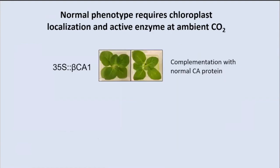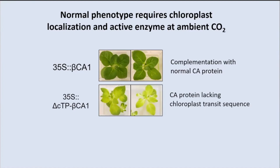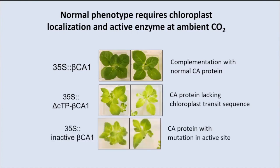We did complementation using the 35S promoter, complementing with CA1, and the complementation shows complete normalization of the phenotype when you complement with the normal carbonic anhydrase protein. However, if you make a CA protein that lacks the chloroplast transit sequence — so the carbonic anhydrase is synthesized but remains in the cytoplasm and doesn't go into the chloroplast — then you get no complementation. As a further demonstration that you need enzymatic activity for normalization, Kevin made a mutant protein with a mutation in the zinc site, and again there was no complementation.